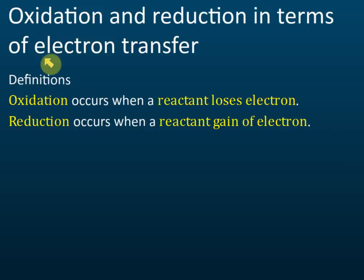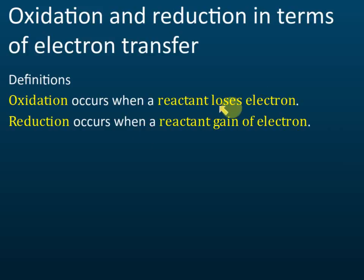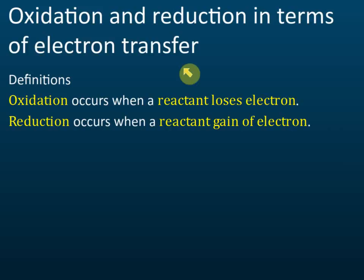Oxidation and reduction in terms of electron transfer: by definition, oxidation occurs when a reactant loses electrons, and reduction occurs when a reactant gains electrons. Similarly, losing hydrogen is oxidation and gaining hydrogen is reduction. This electron transfer method can be applied to all reactions to identify whether oxidation or reduction is occurring.